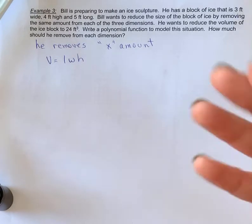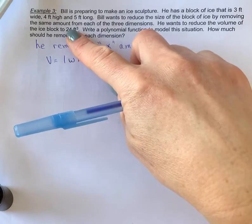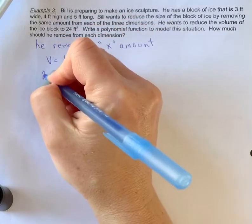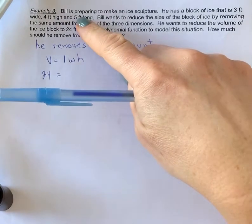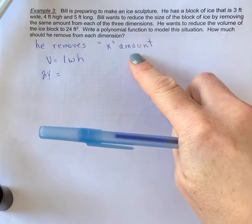So let's create an equation. I want my answer to have my volume, rather my final volume, to be 24. My length is five, but I'm going to subtract off x amount. So it's going to be five minus x.